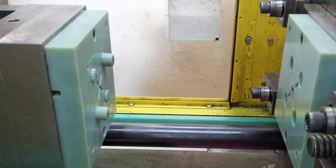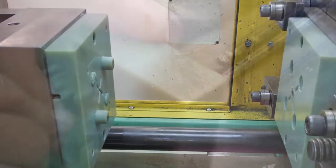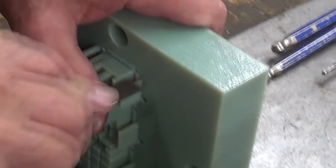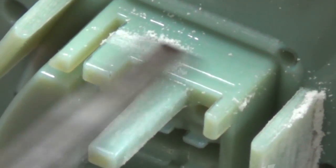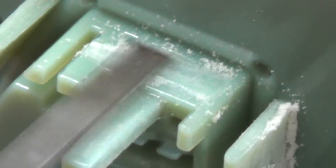Next, the core and cavity are printed on a PolyJet 3D printer. After some light sanding of the mold, it is ready for the injection molding machine when molded parts will be manually removed.